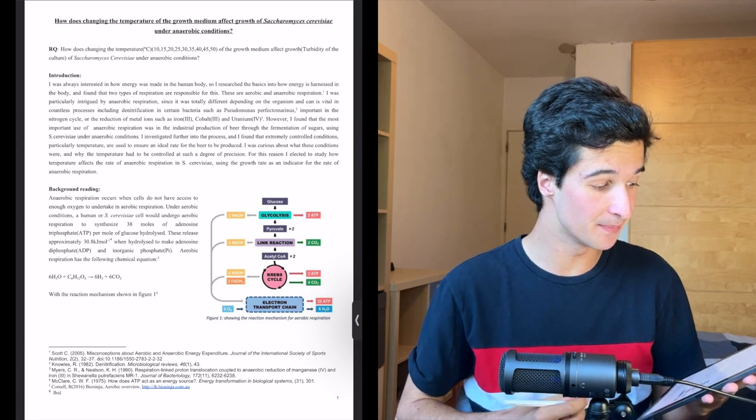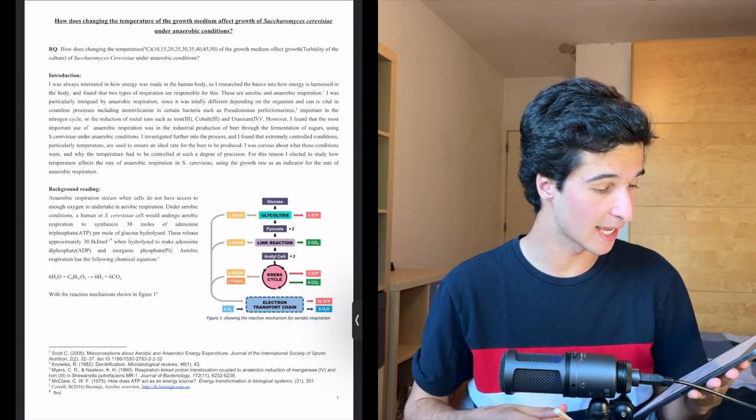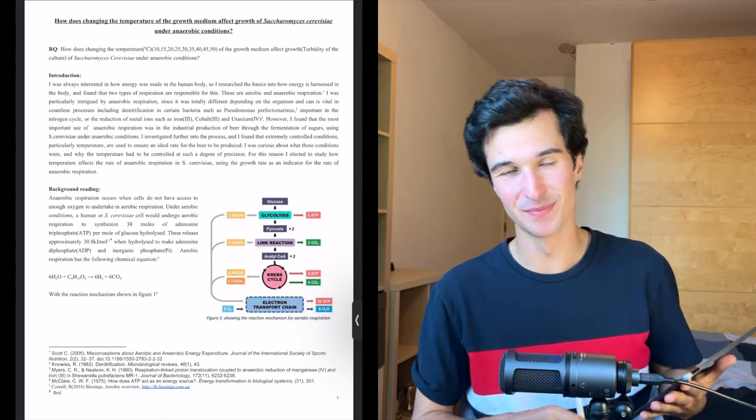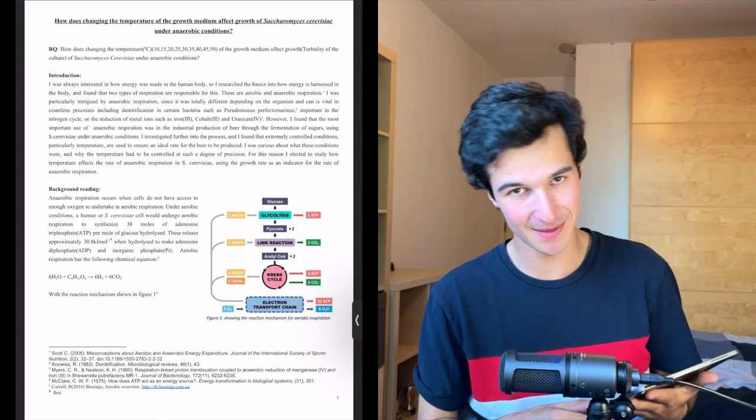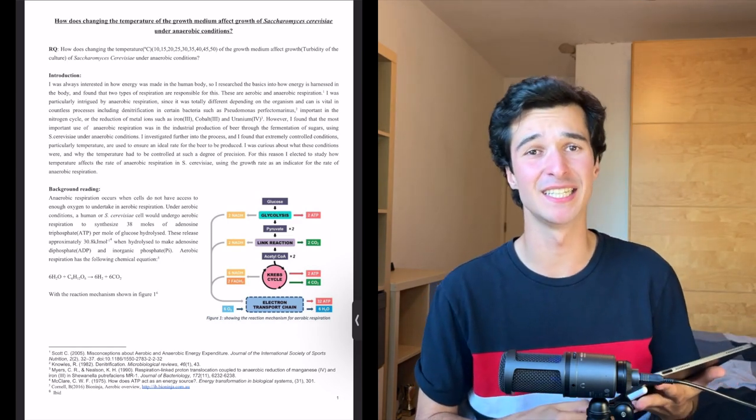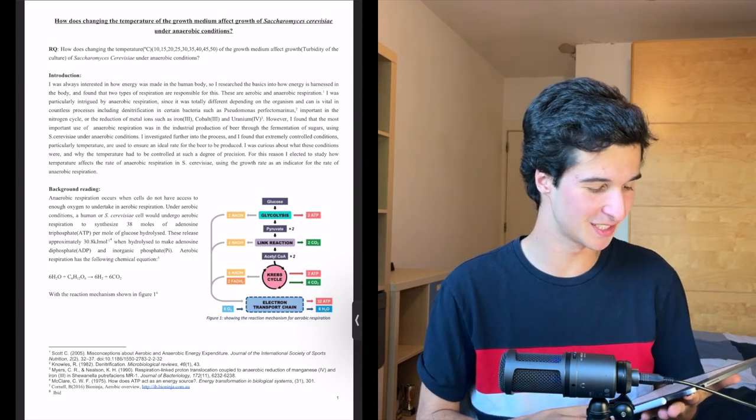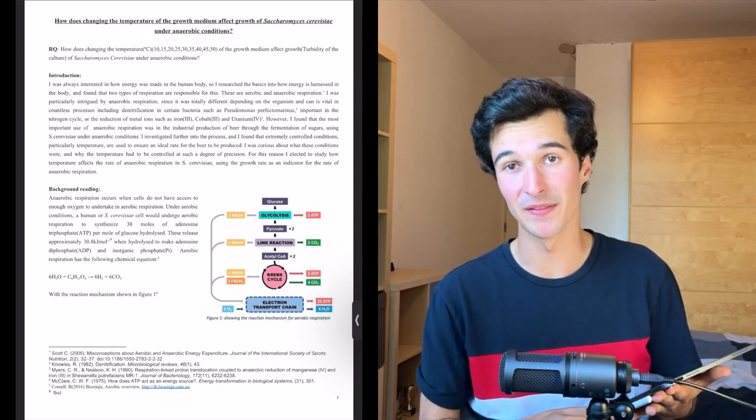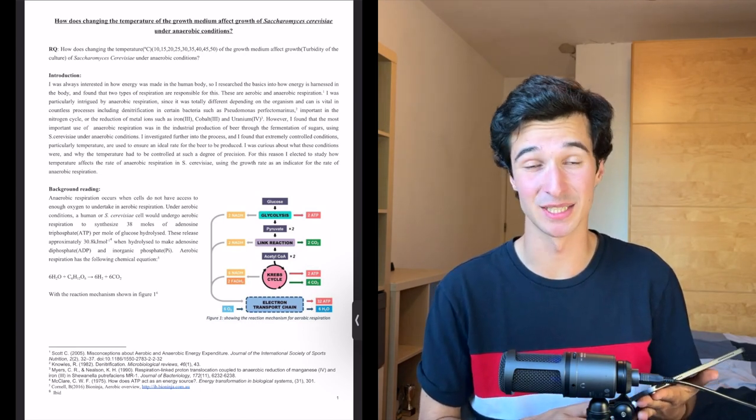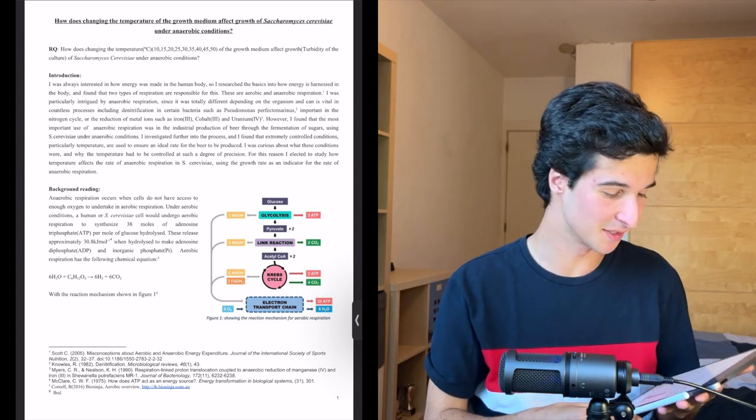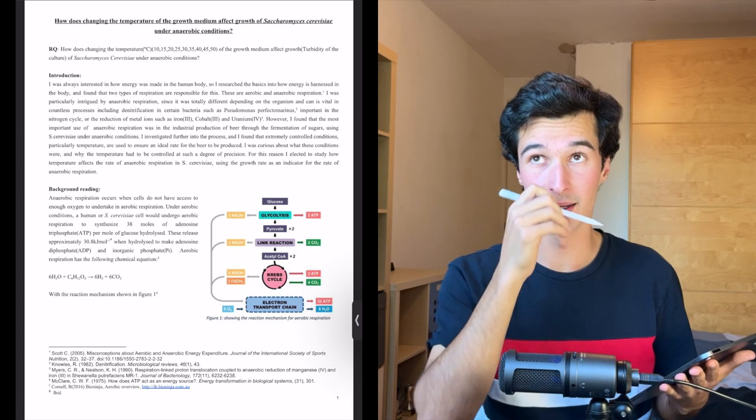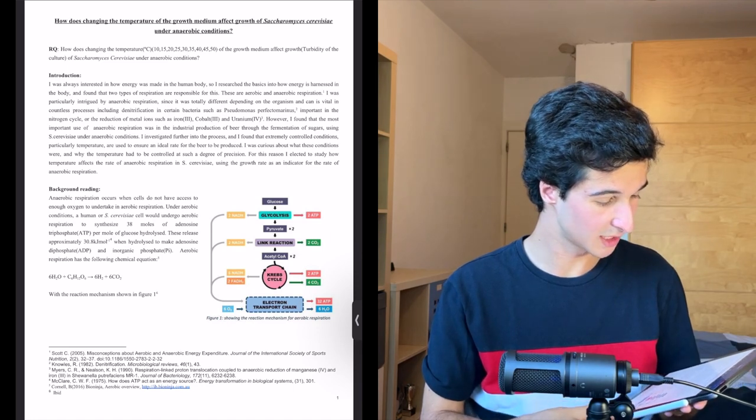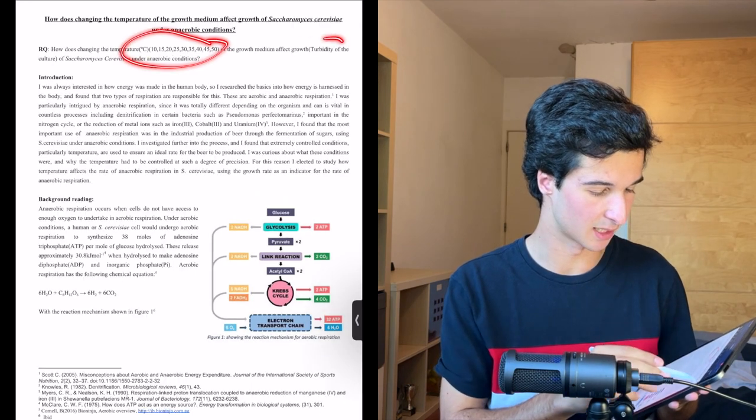How does changing the temperature of the growth medium affect growth of Saccharomyces cerevisiae under anaerobic conditions? So quite literally, how does yeast grow in different temperatures? So biology IAs are very different from chemistry IAs where chemistry IAs you sort of have to go and investigate something completely different and find something totally new whereas a biology IA, how does yeast grow in different temperatures is what I did. In the research question I specify the turbidity of culture.